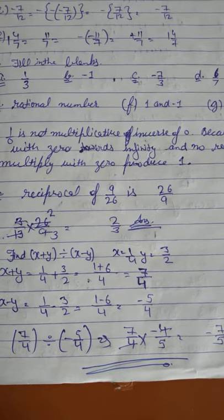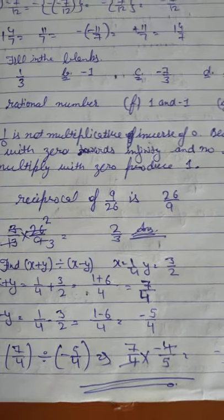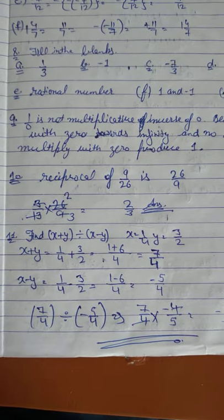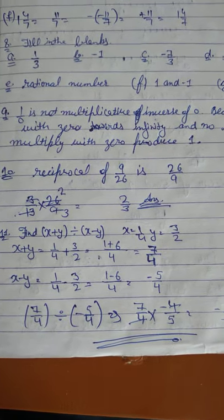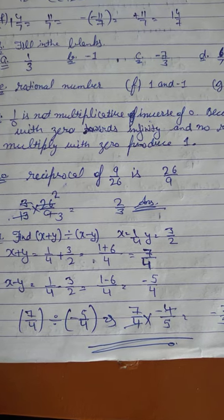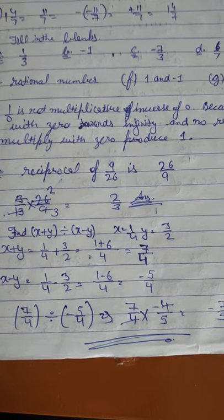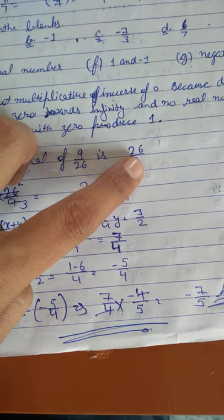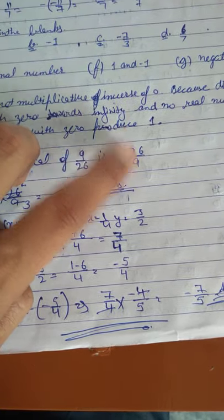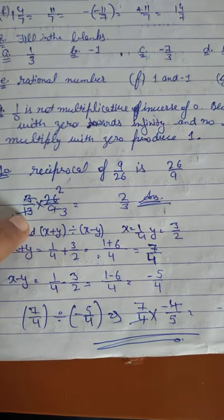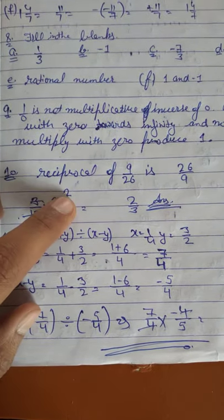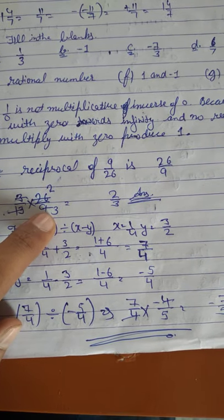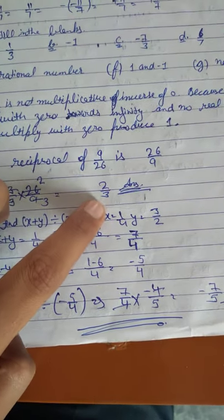That is why 1 over 0 is not the multiplicative inverse of zero. In the tenth sum we multiply 3 over 13 by the reciprocal of 9 over 26. First we find the reciprocal of 9 over 26, which is 26 over 9. Then multiplying: 26 over 9 times 3 over 13 — 13 divides into 26 giving 2, and 3 divides into 9 giving 3 — so the answer is 2 over 3.